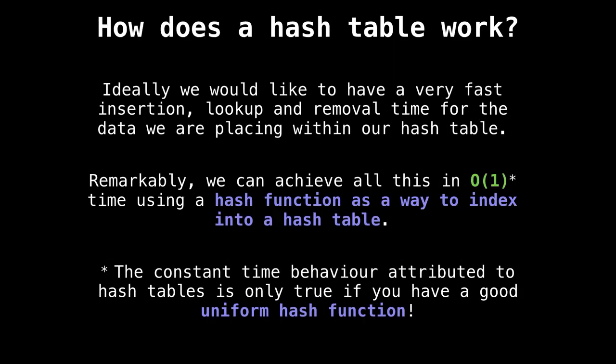Alright, so now let's get into the interesting details. How does the hash table work? Well, ideally, we want our hash function to have really quick insertion lookup and removal times. And remarkably, we can achieve all of that using the hash function as a way to index into a hash table. And a hash table is just a fancy word for an array. Think of it like that. Every time I say hash table think array. So again, we use the hash function as a way to index into the hash table. So the hash function gives us an index to go look up inside the table. And yes, we can do this in constant time. Given that we have a uniform hash function, super essential.